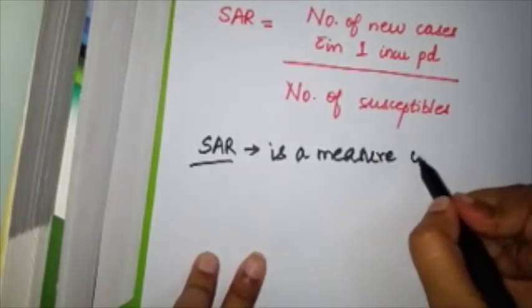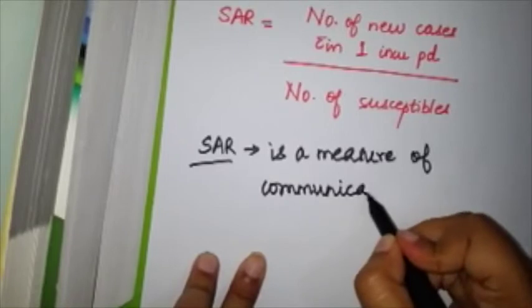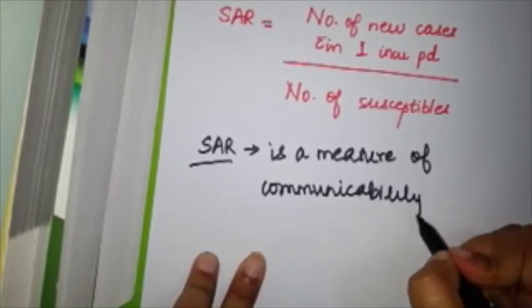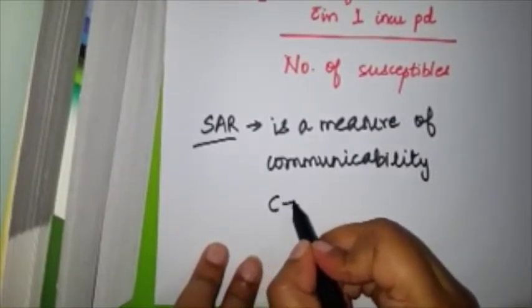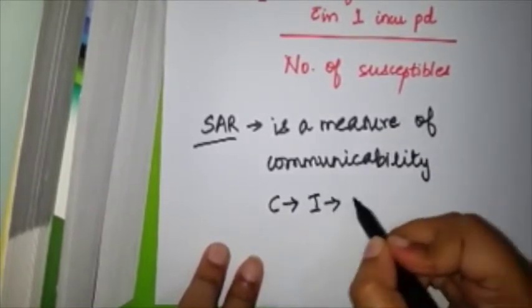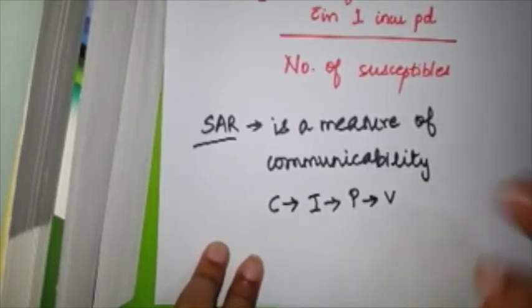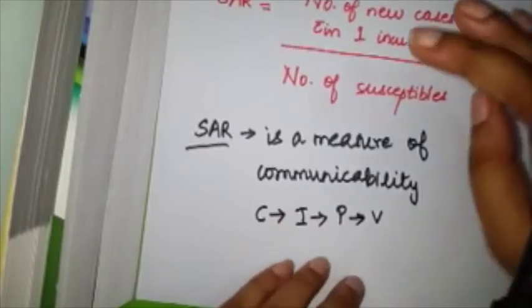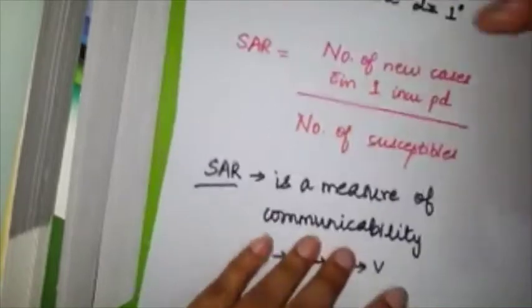So secondary attack rate is a measure of communicability. Again, for those who haven't watched my previous video, any disease gets communicable first, later becomes infective, later it enters the pathogenesis phase, lastly the virulence. The only thing that has become relevant is generally nobody is asking you the definition—they're asking you to calculate the secondary attack rate.